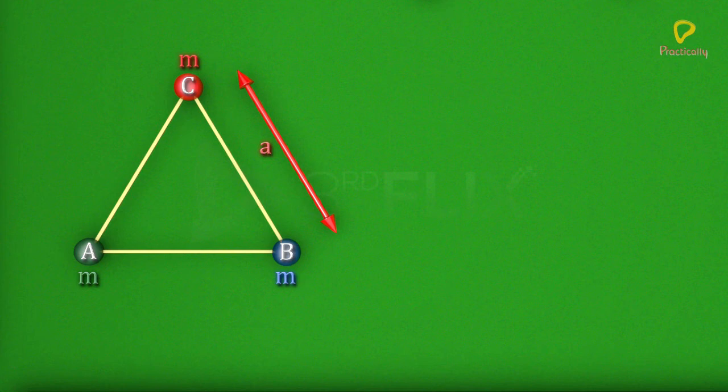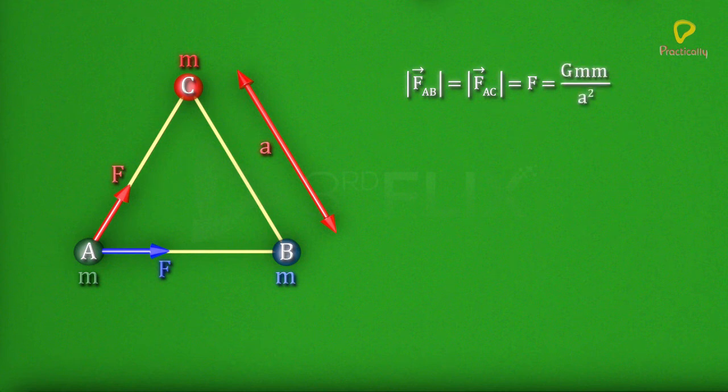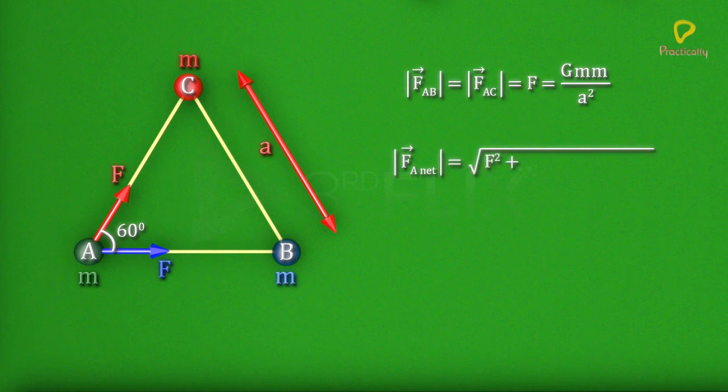The magnitudes of the gravitational force on A due to B and C are equal and equal to G m m by a square, but they act at an angle of 60 degrees with each other. From the vector law of addition, the resultant force on A is equal to square root of f square plus f square plus 2 f f cos 60 degrees.